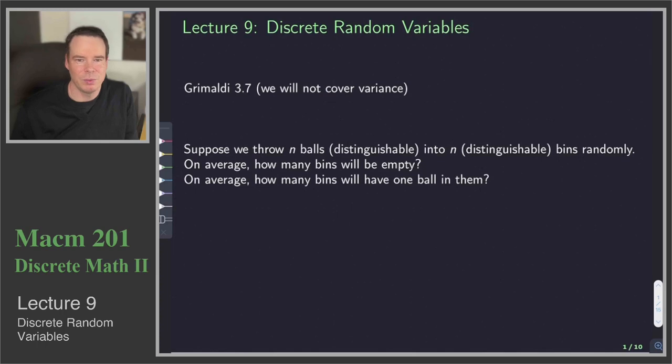Hi everyone, welcome back. It wouldn't be probability if we didn't talk about random variables, and that's what we're going to get into now: discrete random variables. If you want a question to ponder as you're learning this material, I've put up a question which you can think about over the course of the lecture. In fact, we won't come back to this question until the end of lecture 10, so you've got a couple of lectures to think about it.